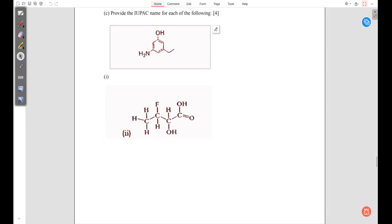Provide the IUPAC name for the following. How many carbons is it? Look at the sides here, so 1, 2, 3, 4, 5, 6. It takes us back to cyclohexane.